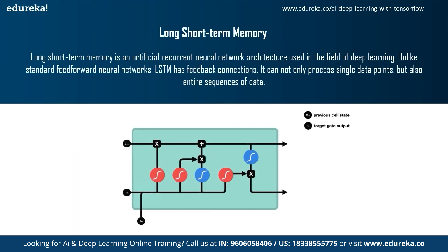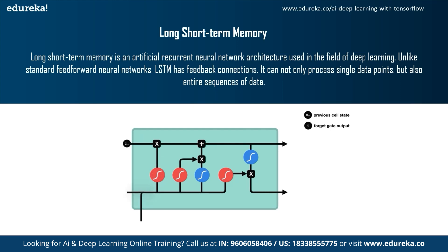The next improvement is Long Short-Term Memory, or LSTM — an artificial recurrent neural network architecture used in deep learning. Unlike standard feedforward neural networks, LSTM has feedback connections and can process not only single data points but entire sequences of data. With LSTM, we can feed longer sequences compared to standard RNNs or Bidirectional RNNs. Moving from RNN to LSTM introduces more control over the sequence of data, giving better results and improved capability.